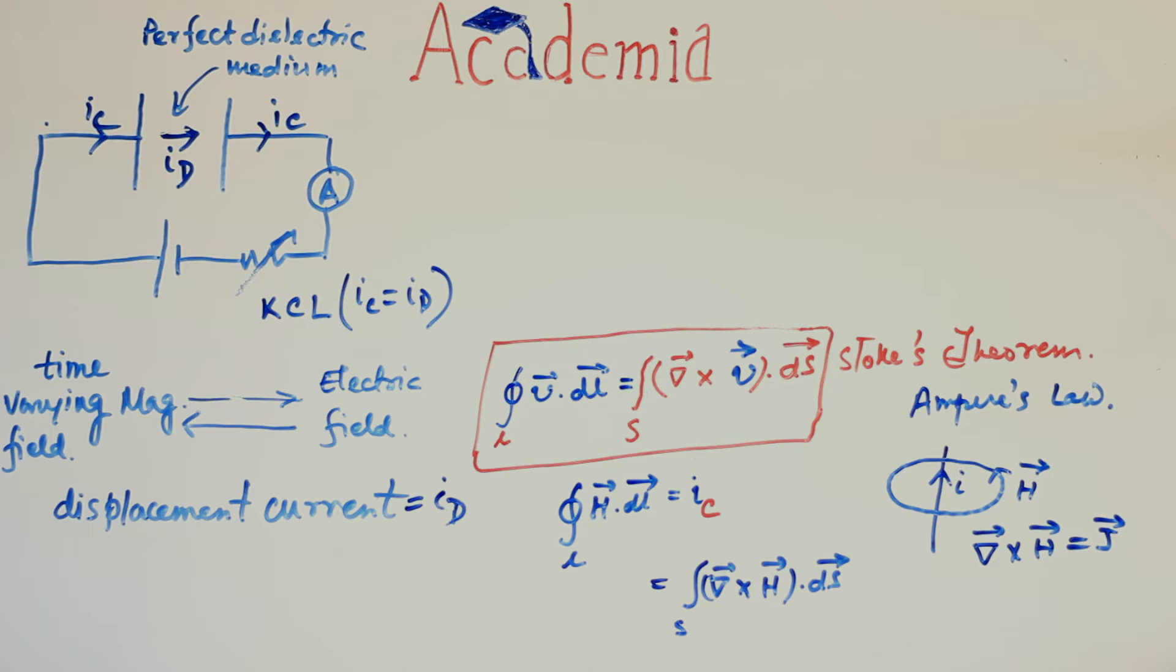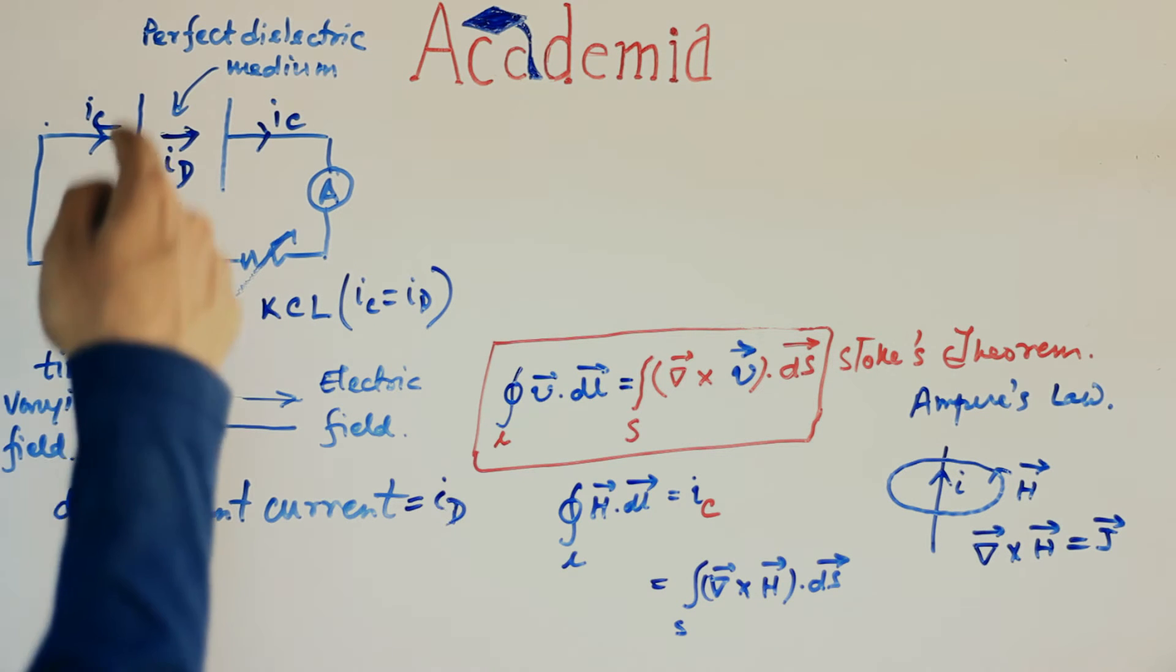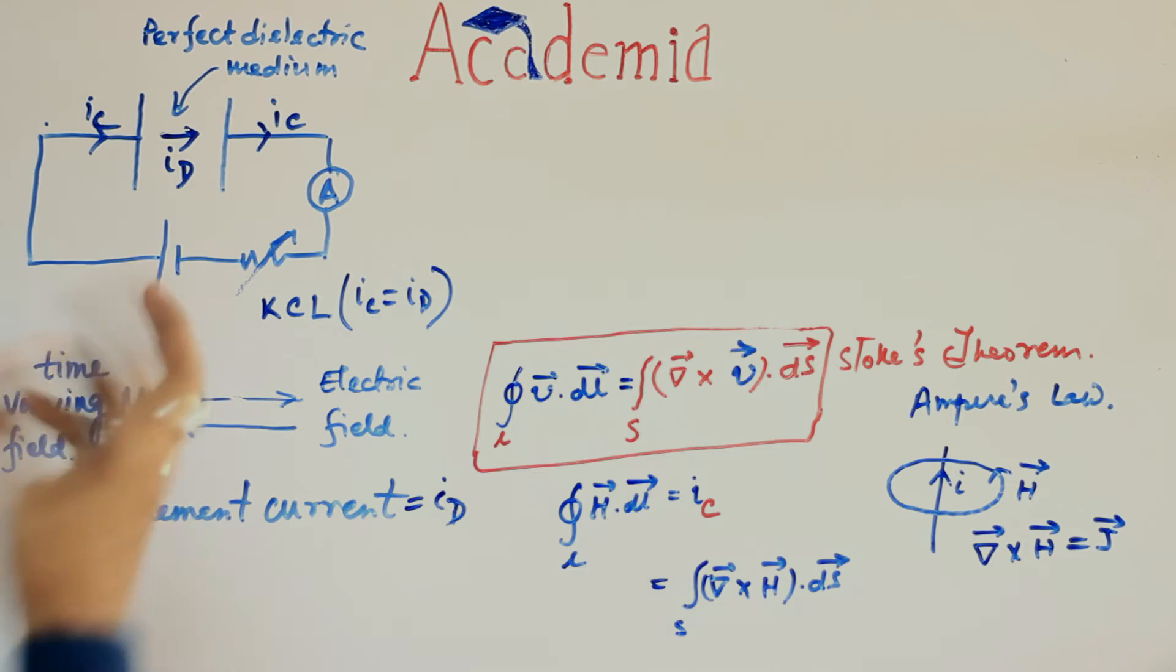Maxwell argued, there is another method of production of magnetic field and it is the presence of time-varying electric field. In the presence of time-varying electric field. So time-varying electric field is present here. Where? Just take a breath.